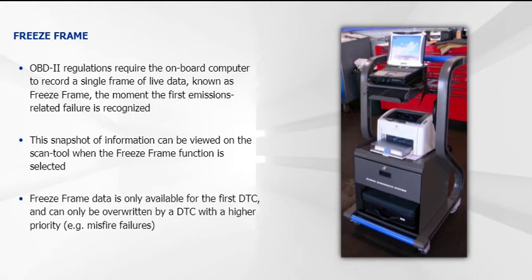Freeze frame data is only available for the first DTC and can only be overwritten by a DTC with a higher priority, for instance, misfire failures.